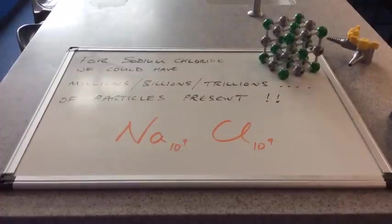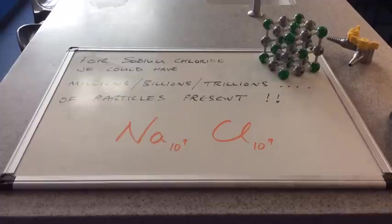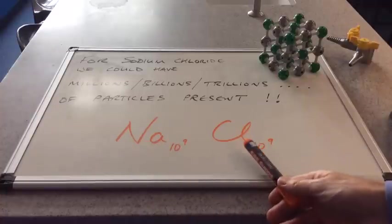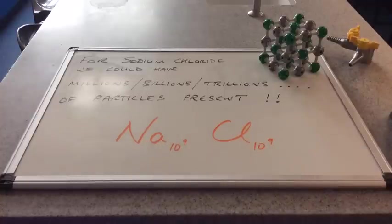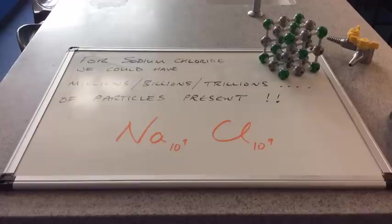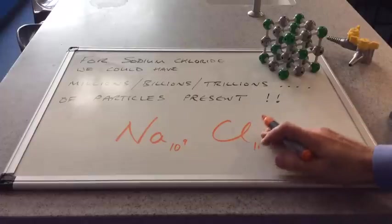Now hopefully you'll have noticed in the two examples I gave, the millions and billions form, the ratio between the two ions was the same. The ratio was 1 to 1. So instead of writing Na times 10 to the 9, Cl times 10 to the 9, or Na times 10 to the 6, Cl times 10 to the 6, because of the one-to-one ratio of the particles, the ions, it's just NaCl.